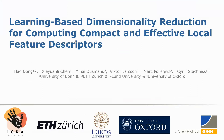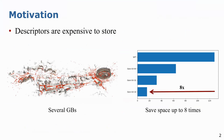Hi everyone, today I will introduce our work on learning-based dimensionality reduction for computing compact and effective local feature descriptors. In many computer vision applications like visual localization and structure from motion, we need to store large amounts of descriptors, which are very expensive. For example, the descriptors of a simple outdoor environment need several gigabytes of storage space.